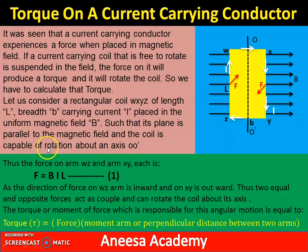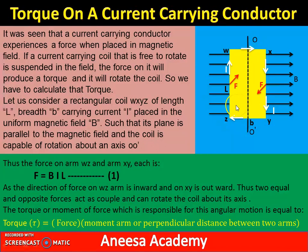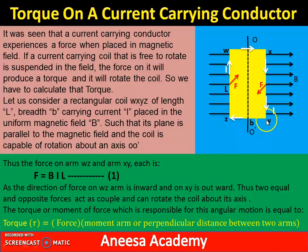The coil is placed such that its plane is parallel to the magnetic field, and the coil is capable of rotation about an axis O-O'. This axis of rotation O-O' allows the coil to rotate. If we see the coil, we have different arms: W to Z, W to X, Y to Y, and Y to Z. We will discuss the forces involved on each arm.